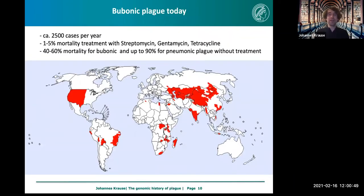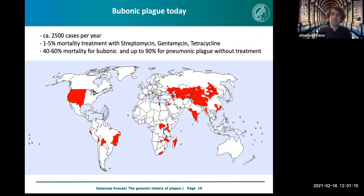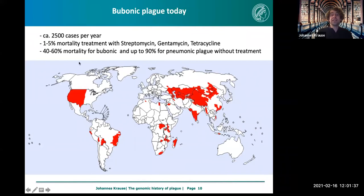Plague is still found in the world today. We have thousands of cases in human populations on all continents. The largest recent outbreak was in Madagascar a few years ago, but it's mostly found in Central Asia in rodent populations that then enter humans. You even find it in North America — if you walk down the Grand Canyon, you'll see warning signs not to feed the squirrels because they carry Yersinia pestis. Fortunately, we have powerful antibiotics to treat it, though a few hundred people still die every year.